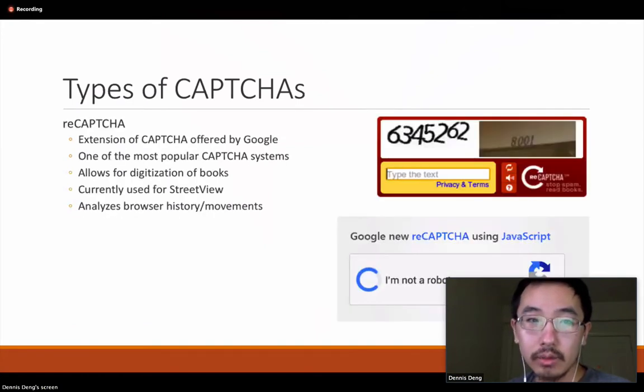The last type of CAPTCHA isn't even really a type of CAPTCHA, but it's more of a concept. It's called ReCAPTCHA, and it's an extension of the CAPTCHA system offered by Google. It's probably one of the more popular CAPTCHA systems in the world. And originally, if we look at the top right, it allowed for digitization of books. So it would give you a word that was known in the first image, and give you an unknown word, and then it would assume that if you match the first word, the second word is correct. And this led to these more complicated styles of reCAPTCHA.